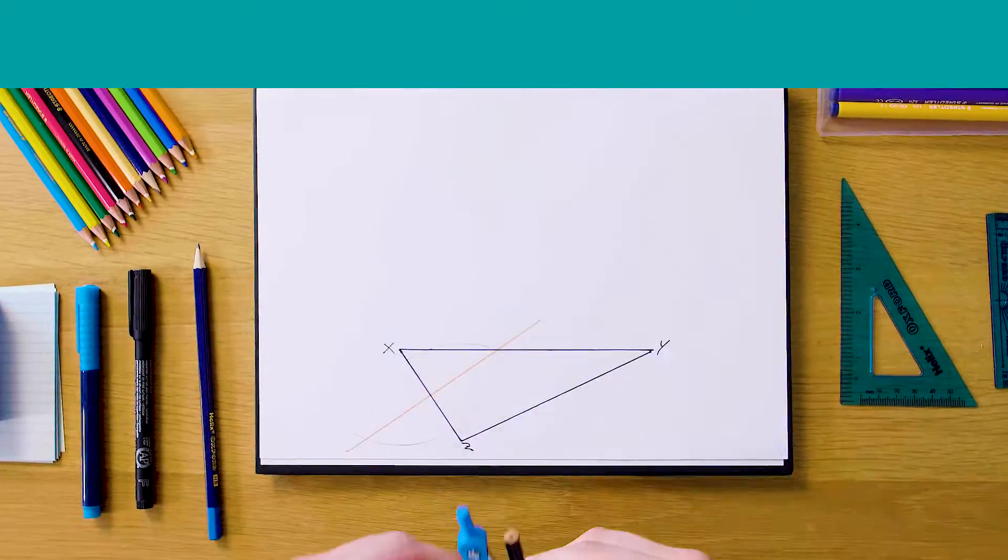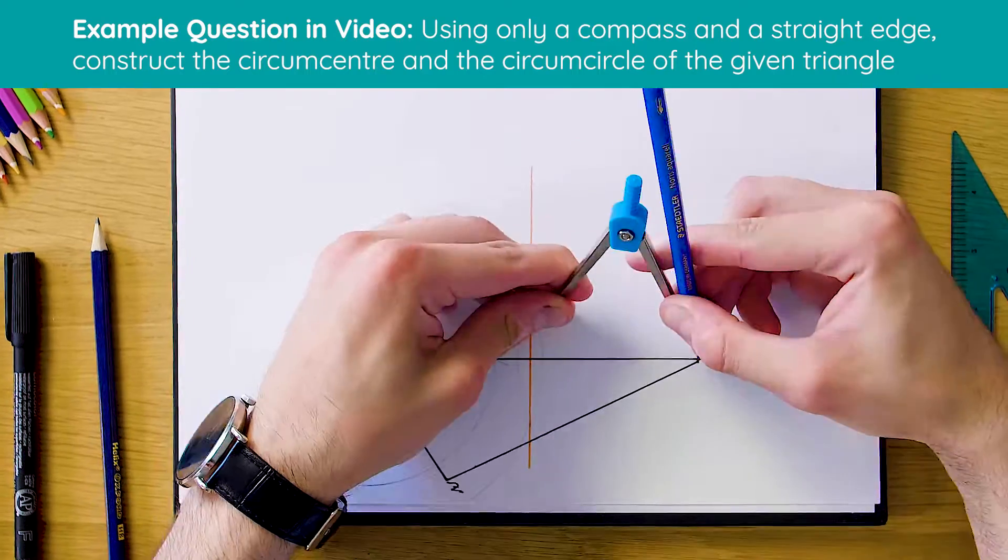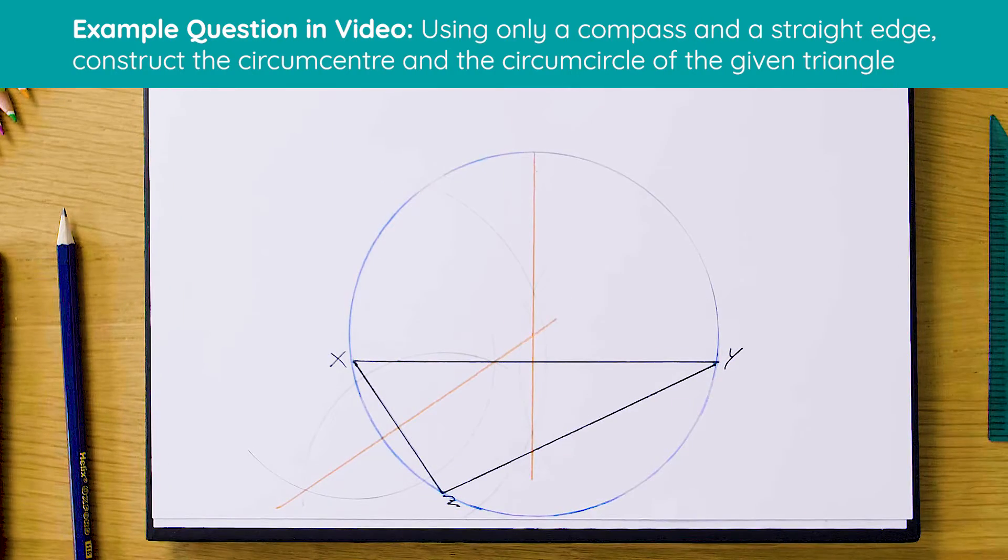Okay, so this is what our circumcentre is going to look like once it's complete, and our circumcircle. So you can see there's quite a lot of construction lines here, and let's just see how this is done.